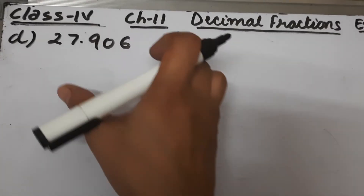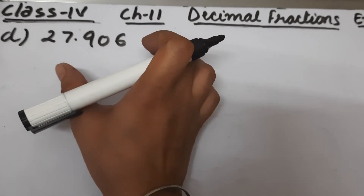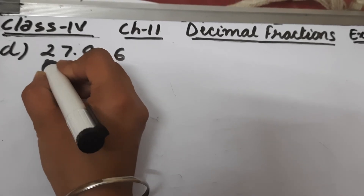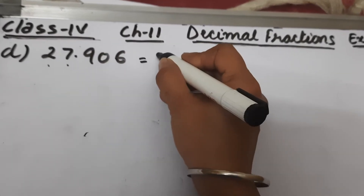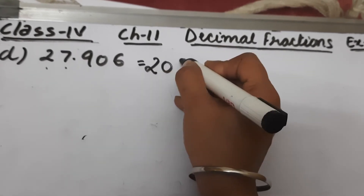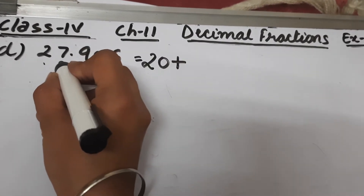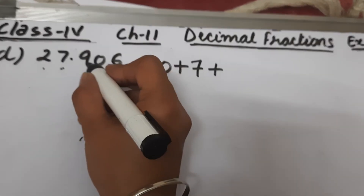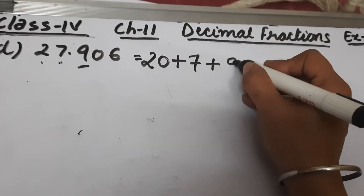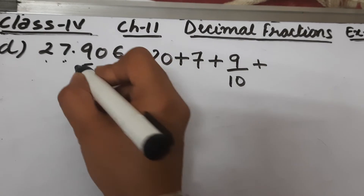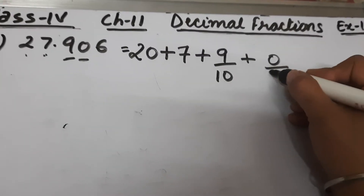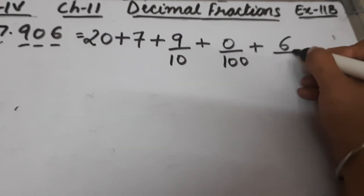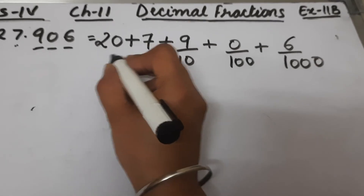Part d is 27.906. We have to expand this. The tens place means multiplied by 10, so 2 multiplied by 10 is 20. Ones place means multiplied by 1, so 7 ones are 7. Then the tenths place means divided by 10, hundredths place means divided by 100, and thousandths place means divided by 1000.